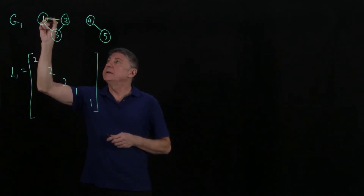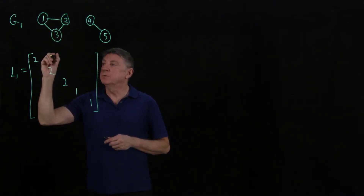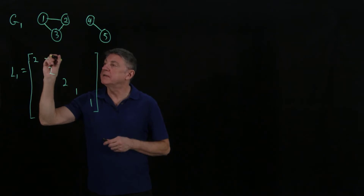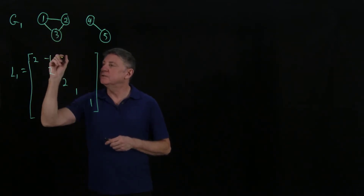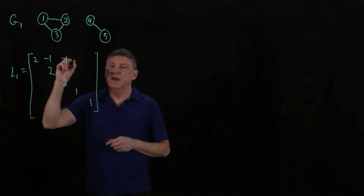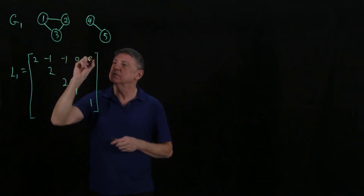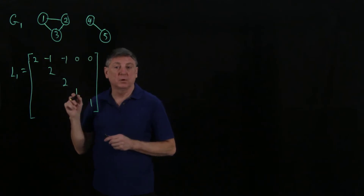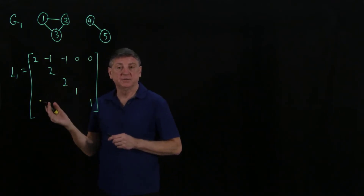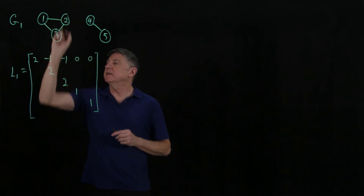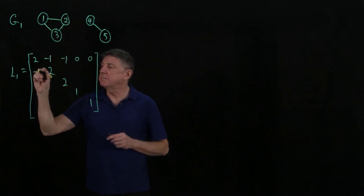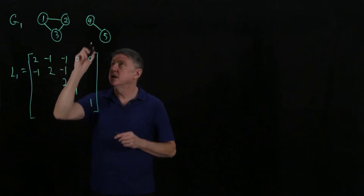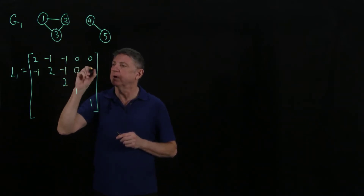Vertex 1 is connected to 2, so we put a minus 1 in that position. It's also connected to 3, so we put a minus 1 there. Filling in row by row rather than taking advantage of symmetry: vertex 2 is connected to 1, so minus 1, and connected to 3, so minus 1. It's not connected to 4 or 5.